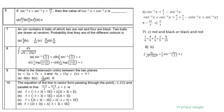Question number 9: what is the distance in units between two planes 3x + 5y + 7z = 3 and 9x + 15y + 21z = 9? Dividing the second equation by 3 gives 3x + 5y + 7z = 3, which is the same as the first. So D1 equals D2, and the distance between these two coincident planes is 0. The answer is A.